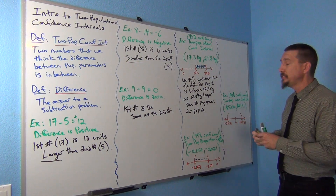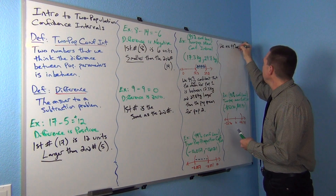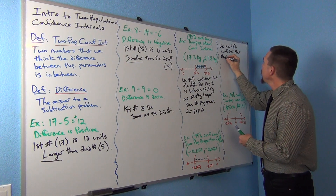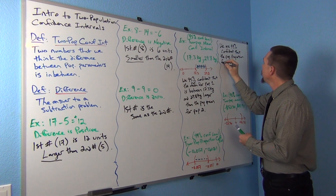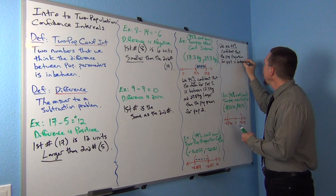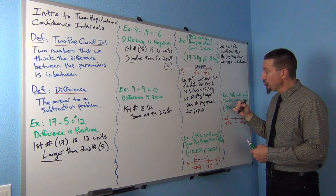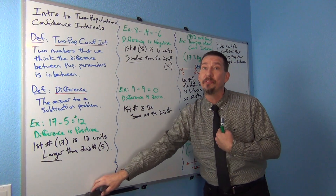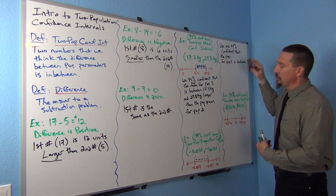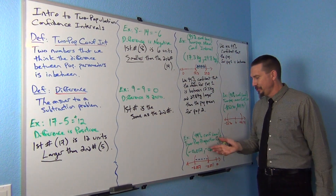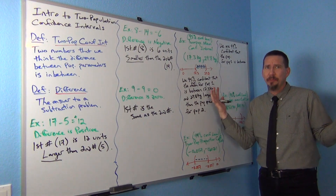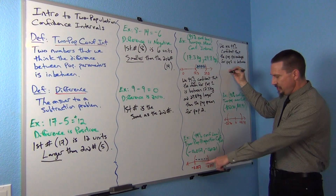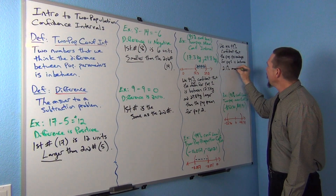So how would we write the sentence? We'd say: we are 99% confident that the population proportion for population one is between 0.021 and 0.057 less than the population proportion for population two. I always prefer to turn it into a percentage — people usually don't understand proportions. So: the population percentage for population one is between 2.1% and 5.7% less than the population percentage for population two.